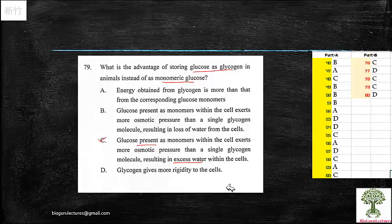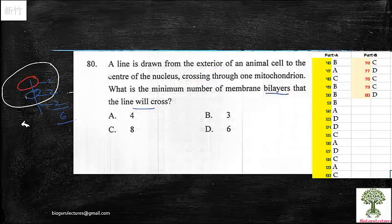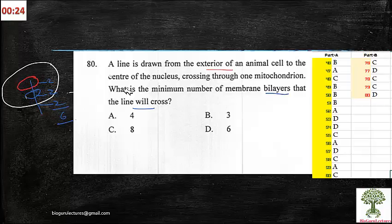Last one: a line is drawn from the exterior of an animal cell to the center of the nucleus, crossing through one mitochondrion. What is the minimum number of membrane bilayers? Already I have drawn here. Red one resembles the nucleus and then mitochondria and then the plasma membrane. I don't think eight is possible at all. If there is an endoplasmic reticulum mentioned here, six will be right. First, nucleus two layers and mitochondria two layers, and then plasma membrane two layers. So total six.